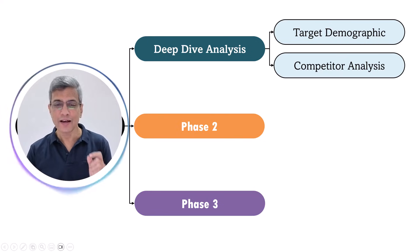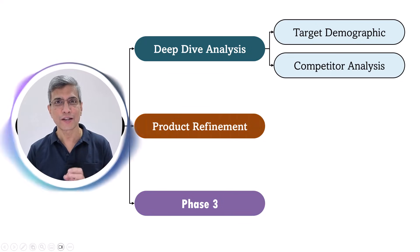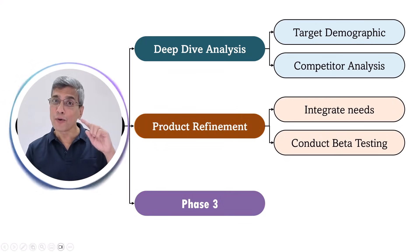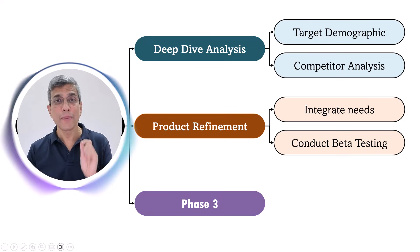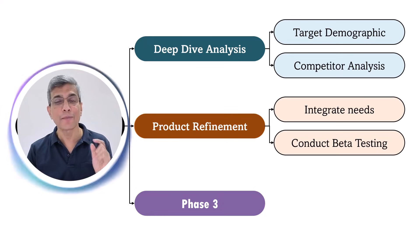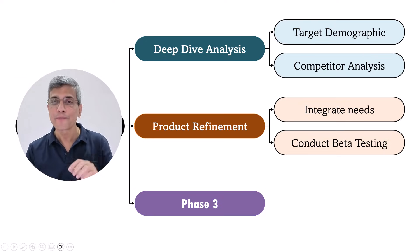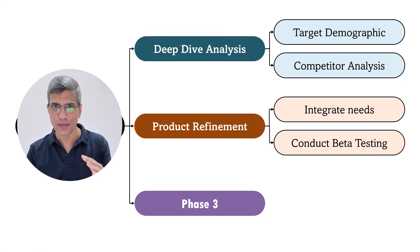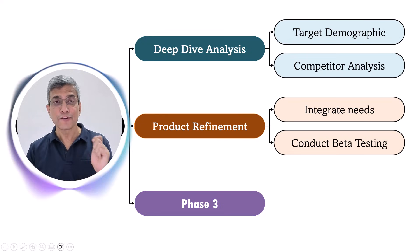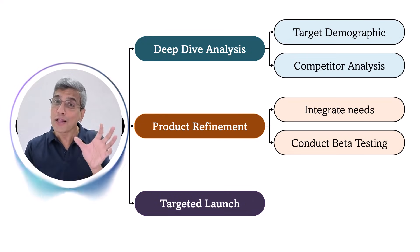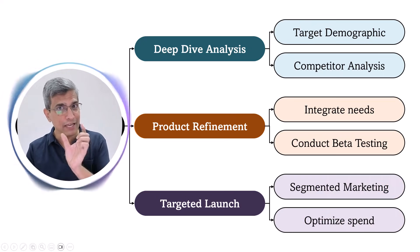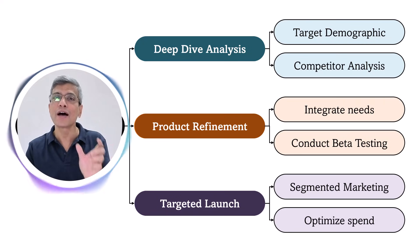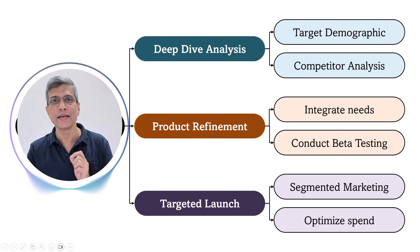Once we have that data, the second phase is product refinement. We integrate the needs that we found in phase one straight into the product. Crucially, we also conduct beta testing and get real practical feedback before the public ever sees it. The final phase is the launch. We take all that deep data from the previous two phases for our laser-focused segmented marketing, and we continuously monitor our conversion rates to optimize the marketing spend.